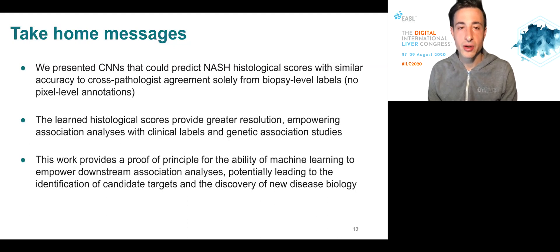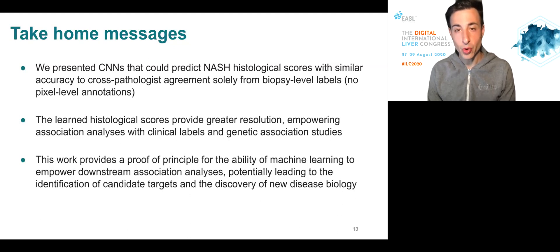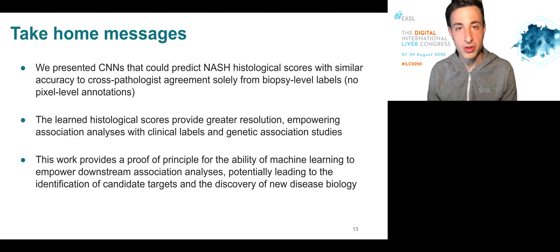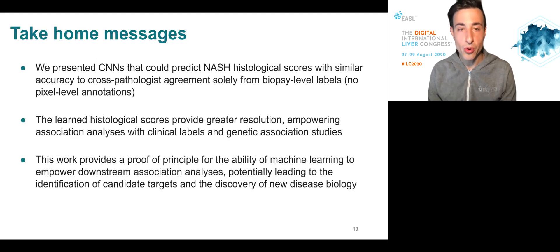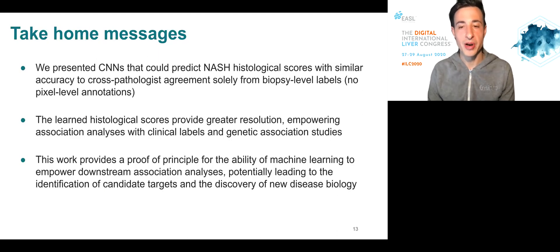We presented convolutional neural networks that could predict NASH histological scores with similar accuracy to cross-pathologist agreement. The networks were solely trained based on biopsy-level labels — we did not use any pixel-level annotation. The learned histological scores provide greater resolution and empowered association analysis with clinical labels and genetic data. This work provides a proof of principle for the ability of machine learning to empower downstream association analysis, potentially leading to the identification of candidate targets and discovery of new disease biology.